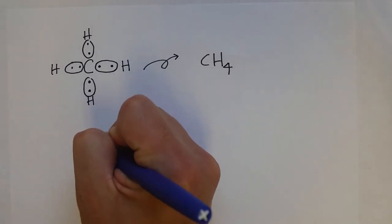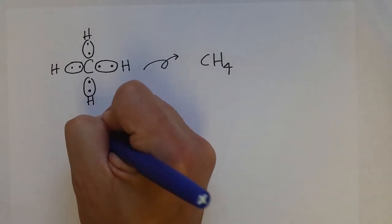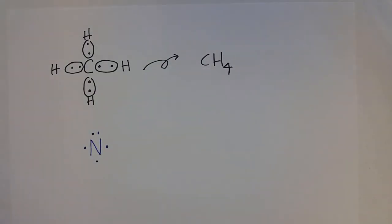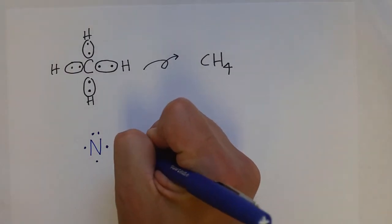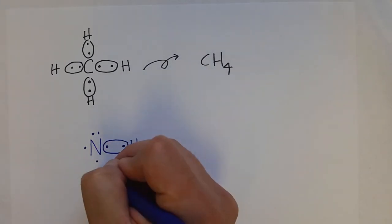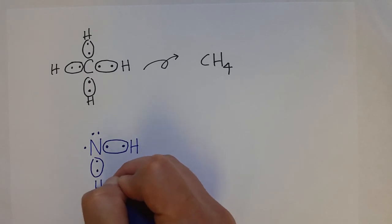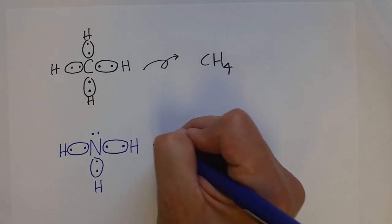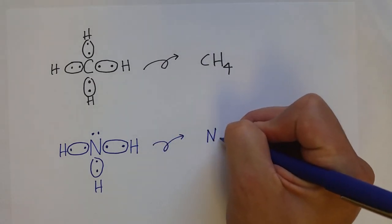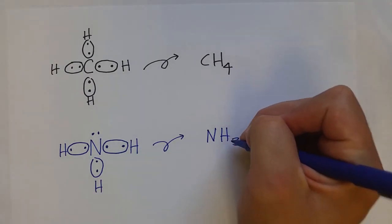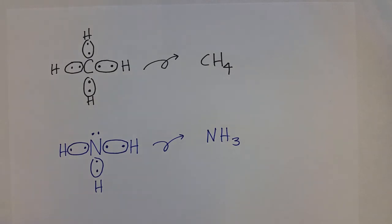Nitrogen typically forms three bonds in molecules so that it can get to the octet rule. In nitrogen N2, the diatomic molecule, we saw it formed a triple bond. But if it reacts with hydrogen or forms a molecule with hydrogen, it would actually form three single bonds with each of three hydrogen atoms to get to a stable configuration of the octet rule. So nitrogen, when it forms a molecule with hydrogen, would form NH3 or ammonia molecule.